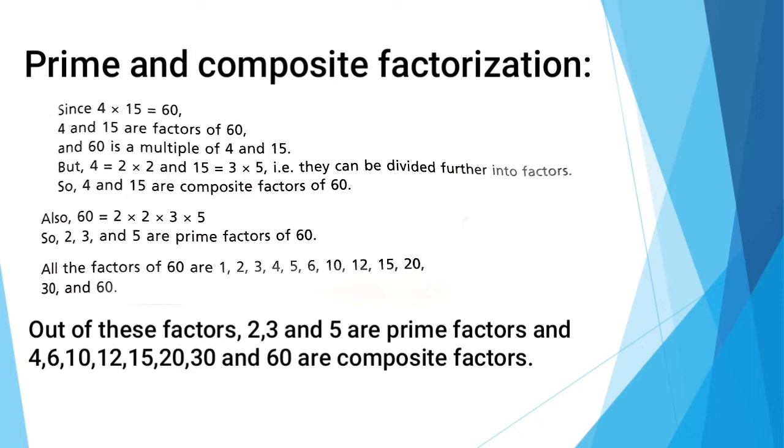Since 4 multiply by 15 is equal to 60, 4 and 15 are factors of 60, and 60 is a multiple of 4 and 15. But 4 is equal to 2 multiply by 2, and 15 is equal to 3 multiply by 5, that is they can be divided further into factors. So 4 and 15 are composite factors of 60.